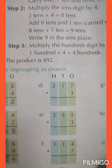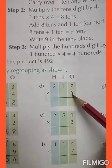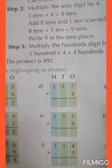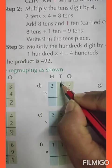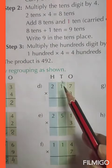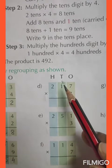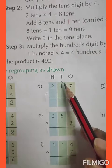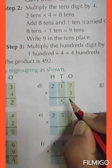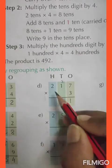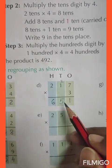Number D: 217 by 3. 3 sevens are 21, 1 is written here and 2 is carried over. 3 ones are 3 plus 2 is 5, we will write 5 here. Next, 3 twos are 6. And the answer is 651.